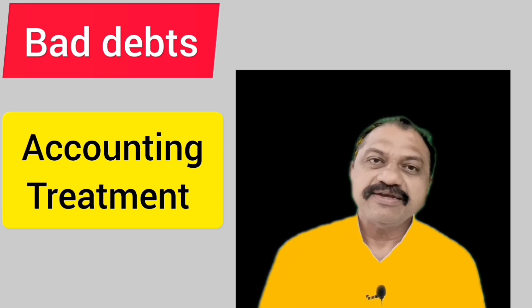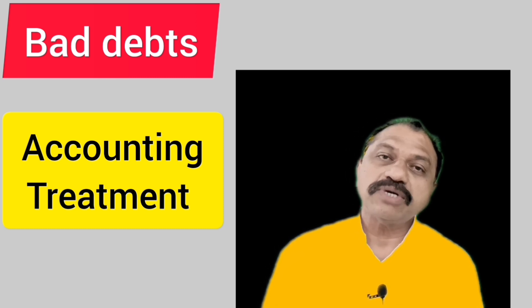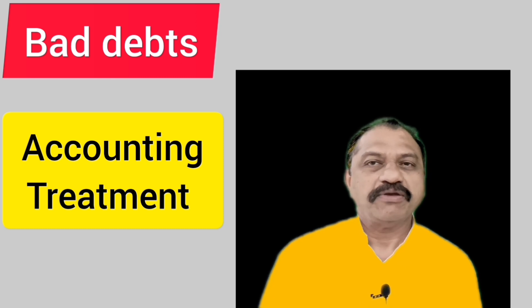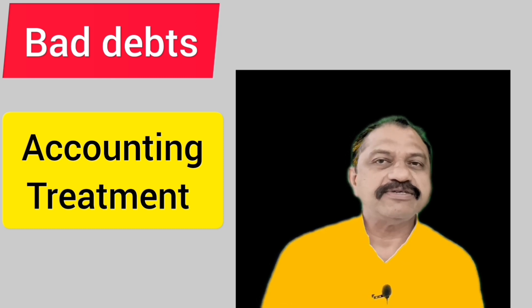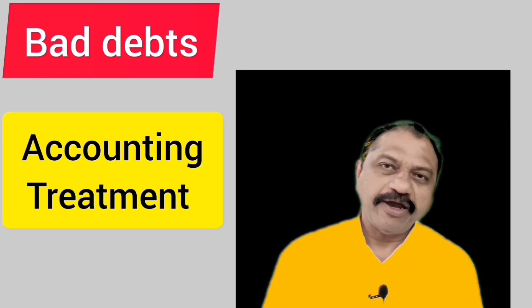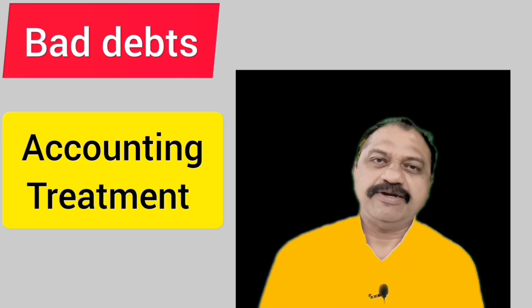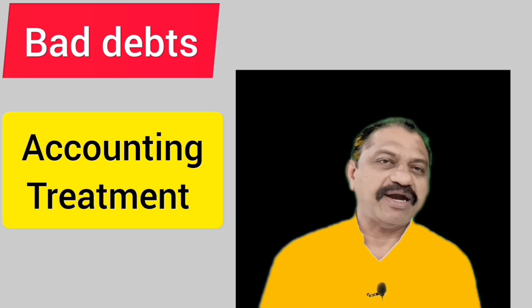Debtors are persons who owe money to the business. From the accounting viewpoint, debts are classified into three: good debts, doubtful debts, and bad debts.